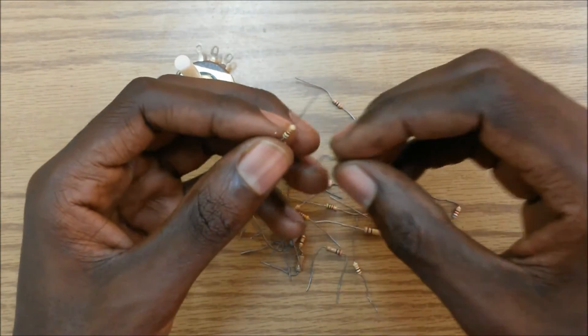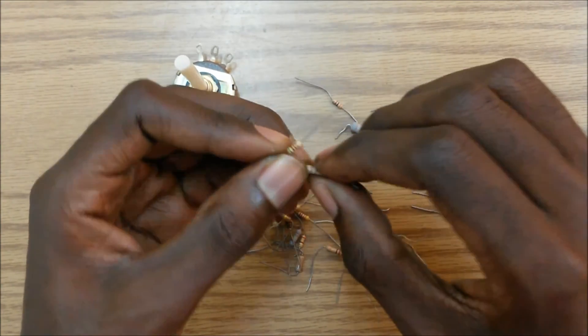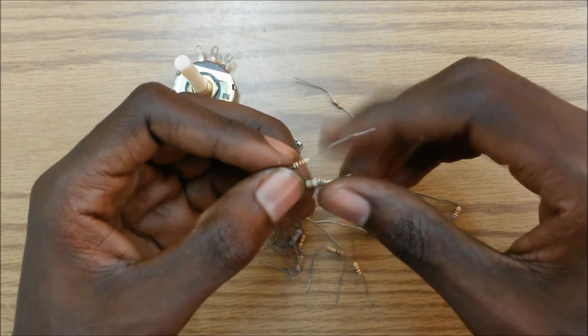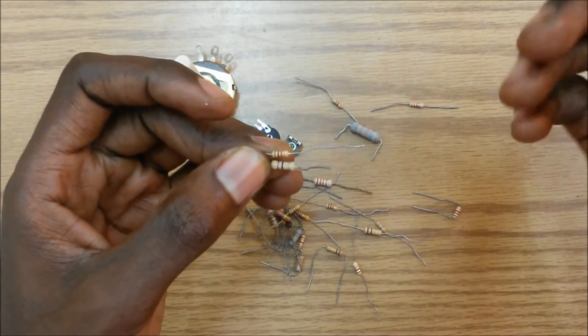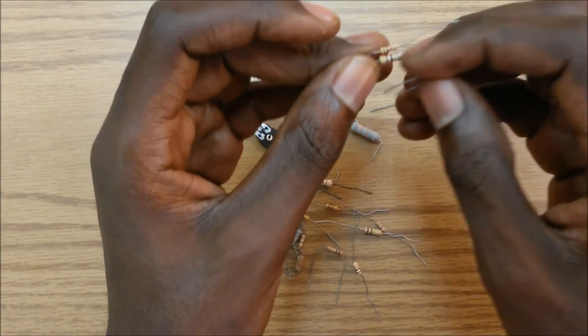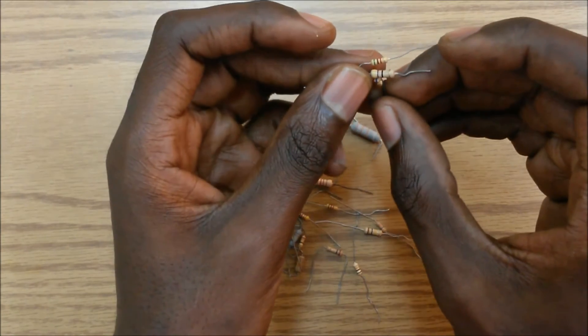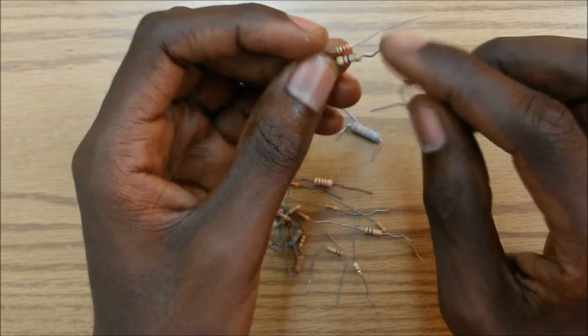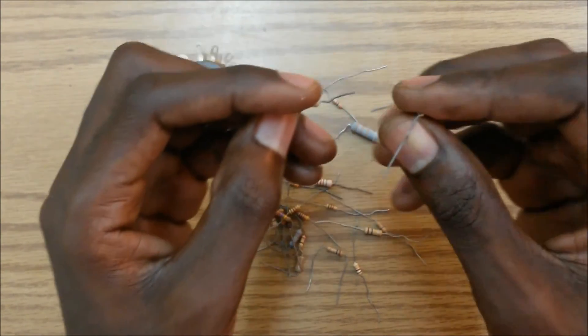So as we said earlier, a resistor will limit or resist the amount of current flowing in the circuit. And how much a resistor will resist the current flowing in the circuit will be dependent on the resistance of the resistor.